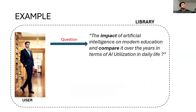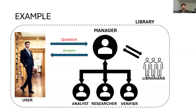The user's question is about the impact of AI on modern education, and he wants to compare it over the years in terms of AI utilization. It looks like a complex query because we have to find information related to the impact and, looking at various documents, compare the utilization over the years. How would an Agentic RAG tackle this problem? Let's assume this architecture. We have a manager who can oversee the team's workflow and assigns tasks to different agents based on their expertise. We can also think of the manager as the orchestrator in the Agentic RAG flow.